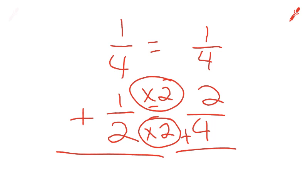Now we're able to add. 1 plus 2 is 3. 3 over 4. Can that be reduced? No. So that is our answer. We are finished. 3 over 4 is our answer.